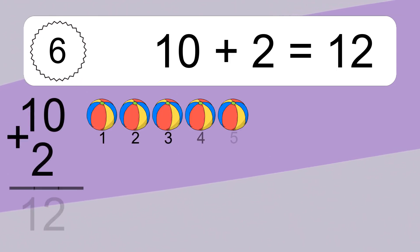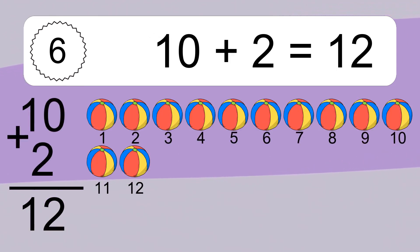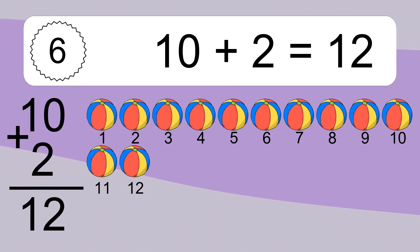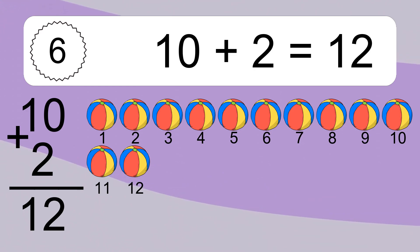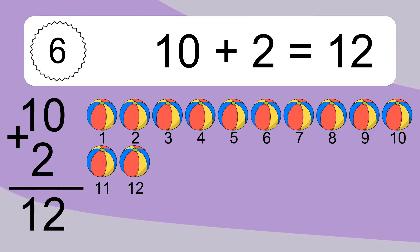10 plus 2 equals 12. Let's count it. 1, 2, 3, 4, 5, 6, 7, 8, 9, 10, 11, 12.